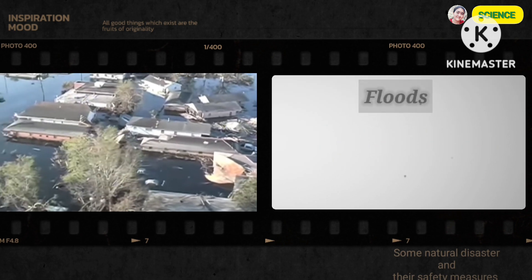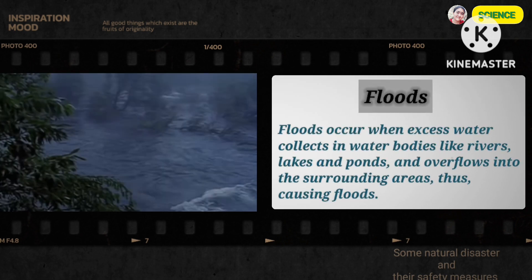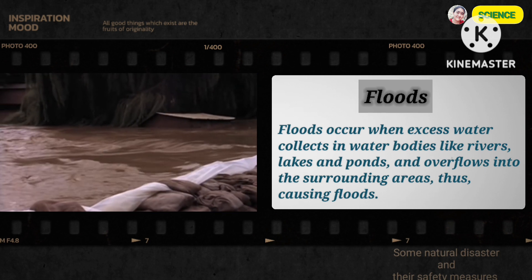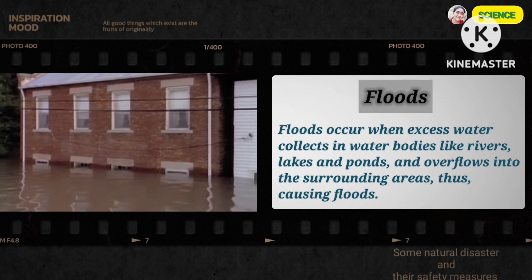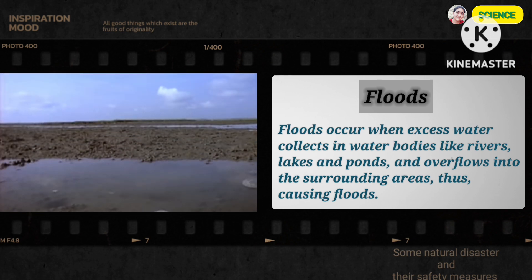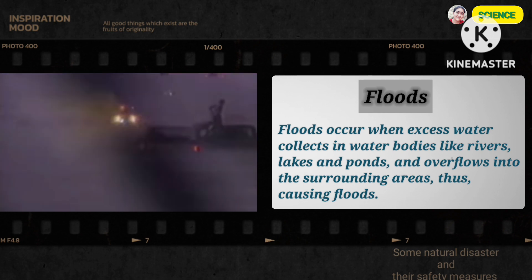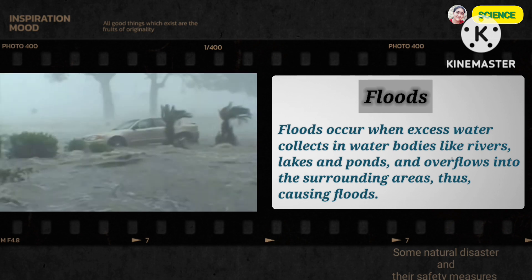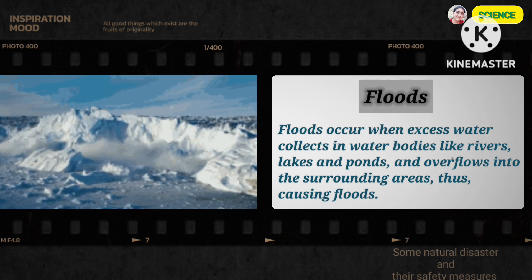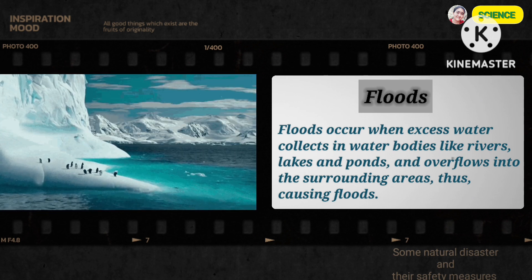Floods. Floods occur when excess water collects in water bodies like rivers, lakes and ponds and overflows into the surrounding areas, thus causing floods. Floods happen due to excessive rainfall, global warming, melting of snow in mountains and glaciers, raising the sea level.